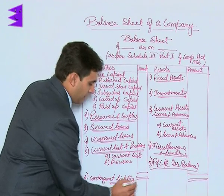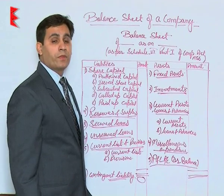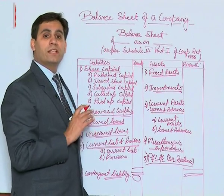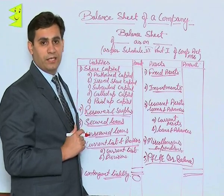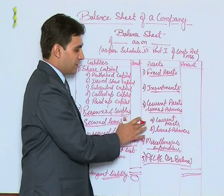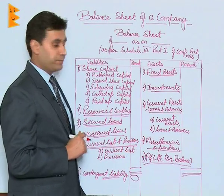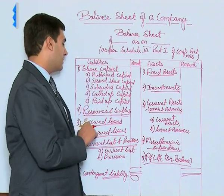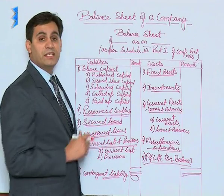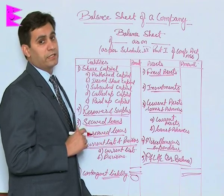So we now have the skeleton format of the balance sheet. The asset side has five major headings: fixed assets, investments, current assets loans and advances, miscellaneous expenditure, and profit and loss account debit balance. The liability side has: share capital, reserves and surplus, secured loans, unsecured loans, current liabilities and provisions, and lastly — after the total — contingent liabilities.